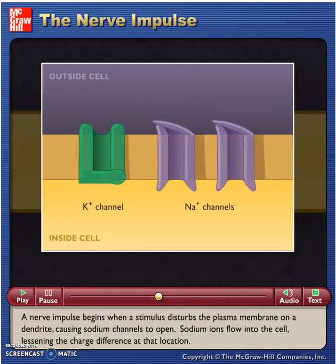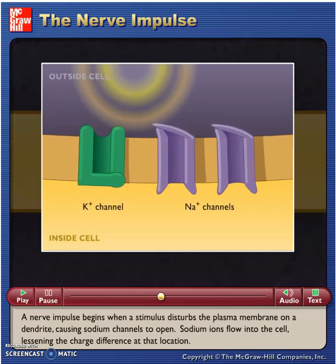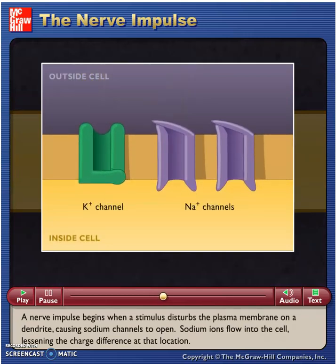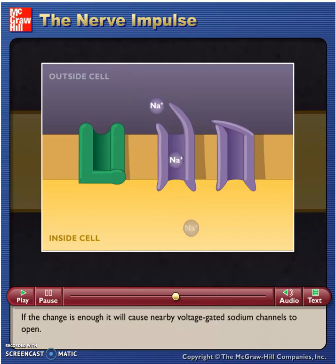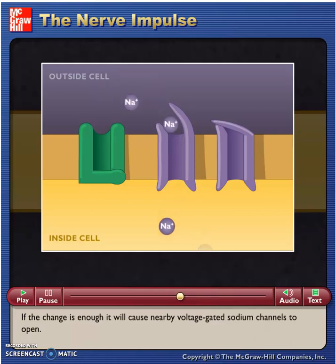A nerve impulse begins when a stimulus disturbs the plasma membrane on a dendrite, causing sodium channels to open. Sodium ions flow into the cell, lessening the charge difference at that location. If the change is enough, it will cause nearby voltage-gated sodium channels to open.